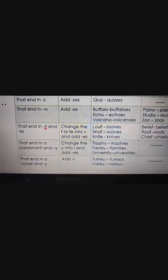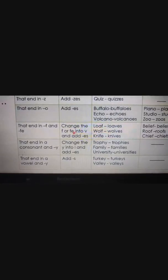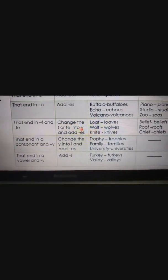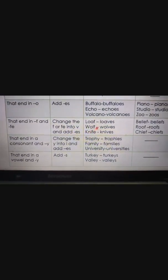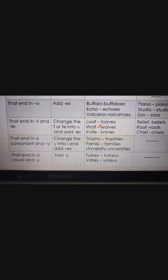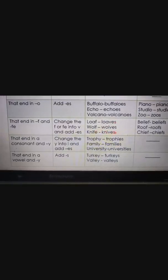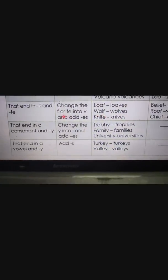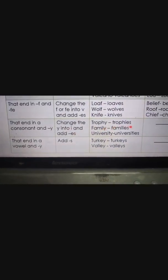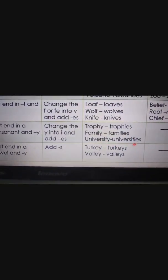Nouns that end in F and FE — change the F or FE to V and add ES. That is loaf/loaves, wolf/wolves, knife/knives. Nouns ending in a consonant and Y — change the Y to I and add ES. Like trophy/trophies, family/families, university/universities.